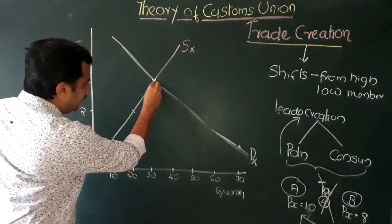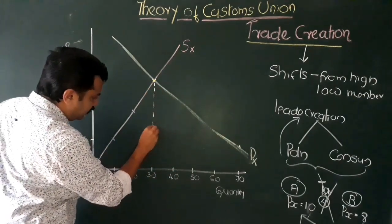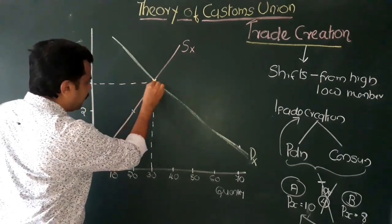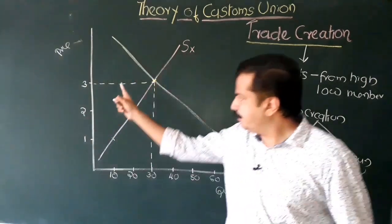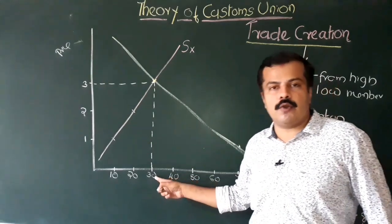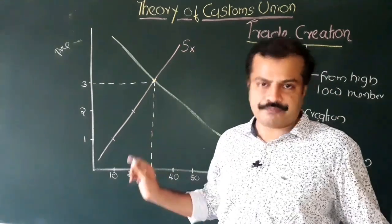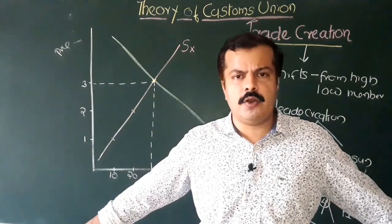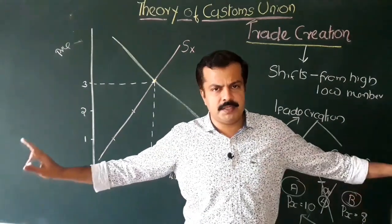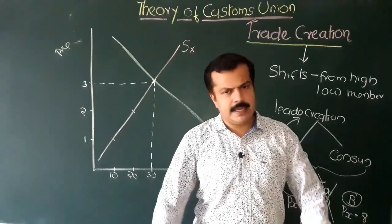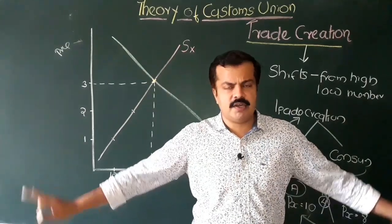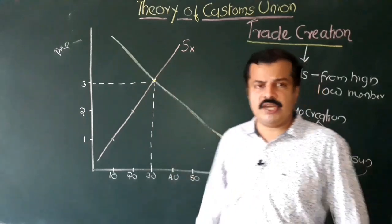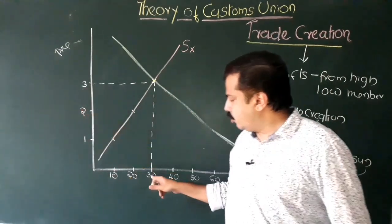Together they intersect at a point where the price of this commodity is 3 and quantity demanded equals quantity supplied at 30. This is the initial situation where we are assuming that there is no bilateral trade relationship between the member countries, or any kind of trade relationship with the rest of the world. This equilibrium will be set at price 3 and quantity 30.